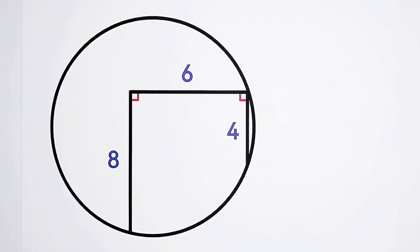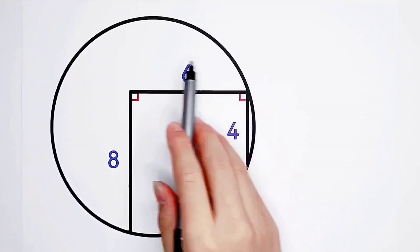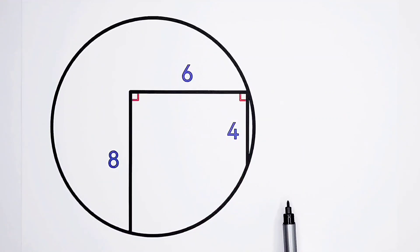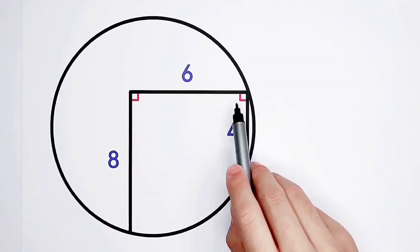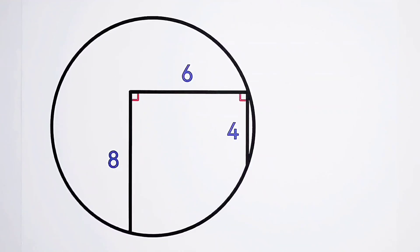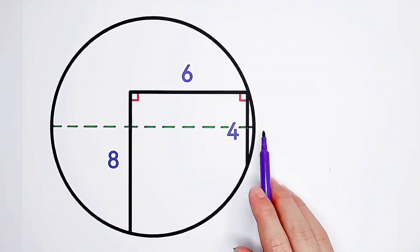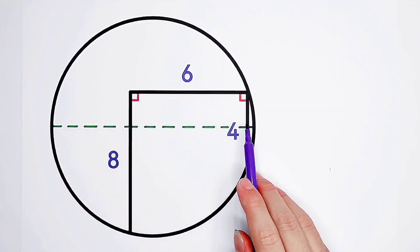How can we find the midpoint? There is a special line segment here. That is, this line segment measuring four. Now, we should construct its perpendicular bisector. And you will see, the midpoint of the circle is on this green line segment.